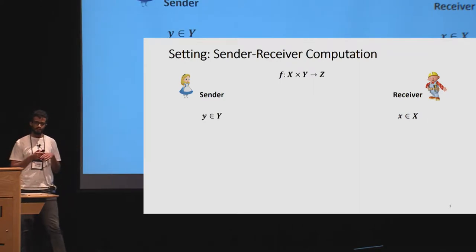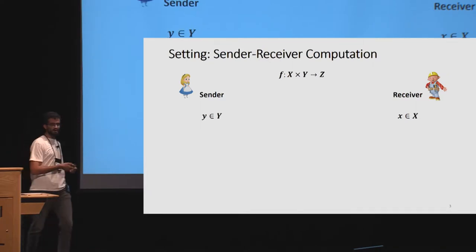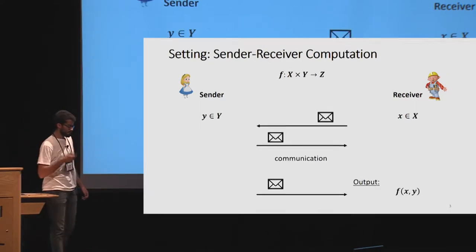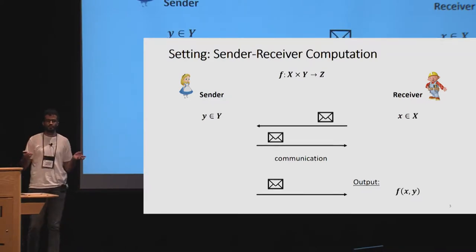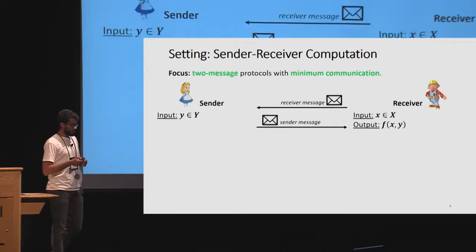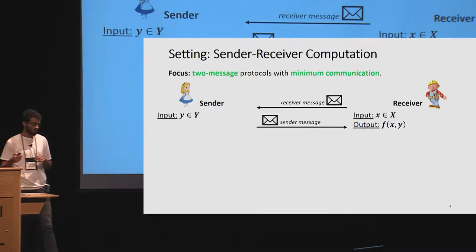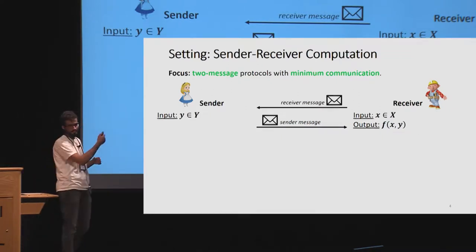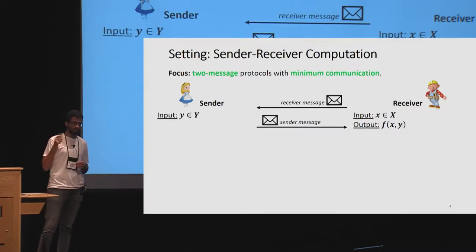All of our applications fall in the following context: we have a public function f that takes two inputs, a receiver Bob with input X and a sender Alice with input Y. The goal is to let these two parties communicate, and at the end we want the receiver to learn the output of the function on both inputs. Our focus for this talk is on protocols that consist of only two messages: first the receiver sends a message, then the sender responds.